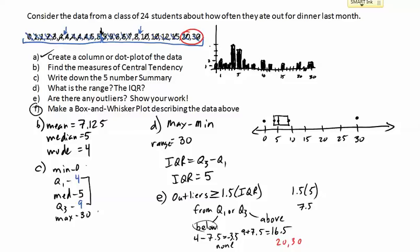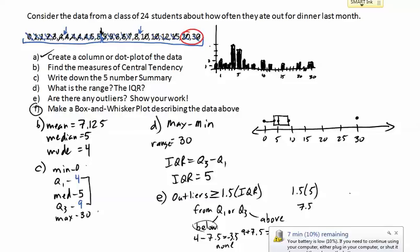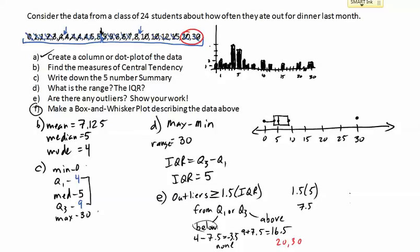Looking at the box you can see a lot of people ate out four or five times. From there we create the whiskers — the left whisker goes out to the minimum, and the right whisker goes out to the biggest number within our range, not counting outliers. Since 30 and 20 are both outliers, the biggest number inside the range is 15, so the whisker only goes to 15. The two outliers — 20 and 30 — are shown as individual points beyond the whisker.